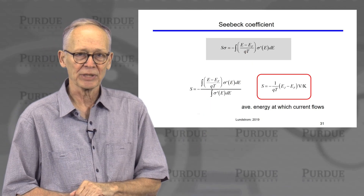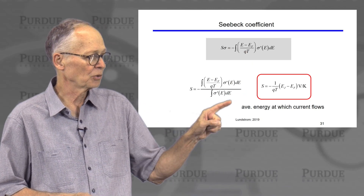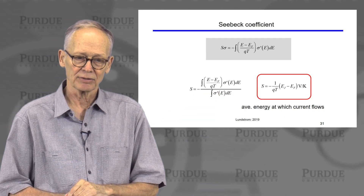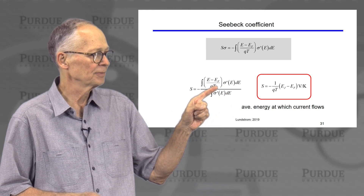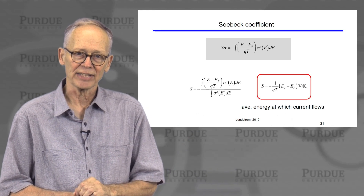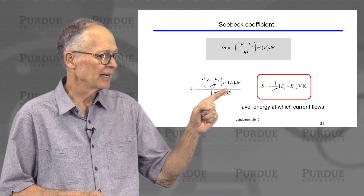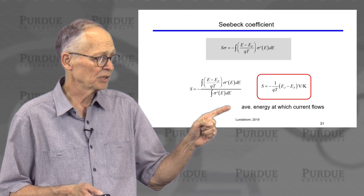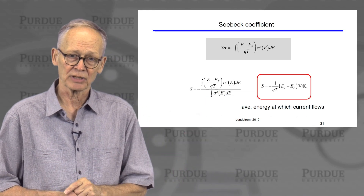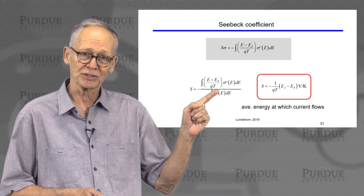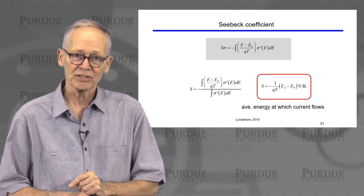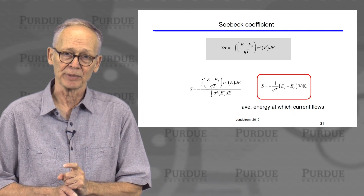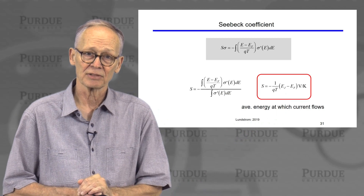Here's the mathematical expression we developed. If we divide by the total conductivity to get the Seebeck coefficient, we have an expression for S. Looking at that expression, it computes an average of the energy — weighting the energy by the amount of current that flows at that energy (the differential conductivity) and then dividing by the integrated total conductivity. So the Seebeck coefficient is simply related to the average energy at which the current flows with respect to the Fermi energy, giving us this very simple expression for the Seebeck coefficient.